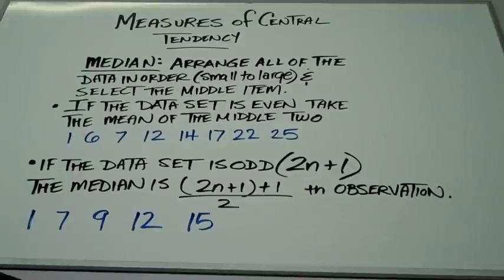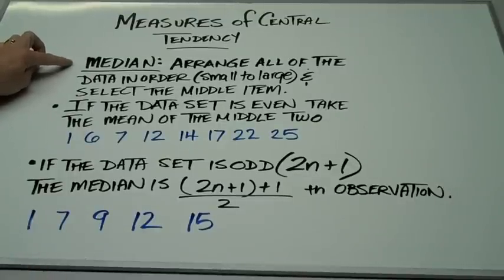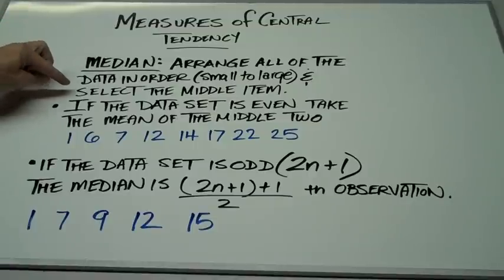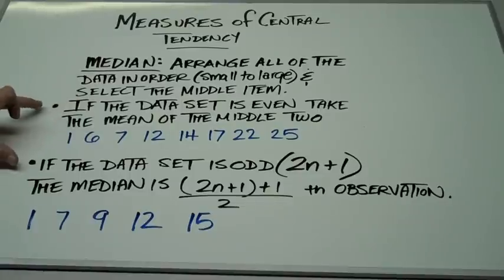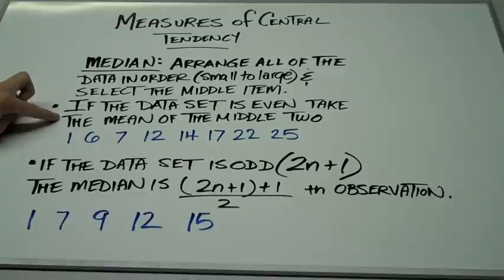Another measure of central tendency is the median. To find the median, the first step is to arrange all the data in order from small to large — this is a step that younger students often forget. After the data has been arranged, and only then, do you select the middle item. This gives us two situations. What if the data set is even? If I have an even number of entries, I take the mean of the two middle entries.